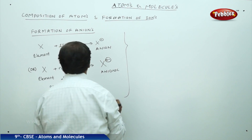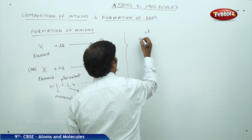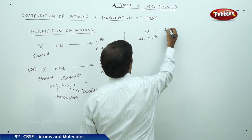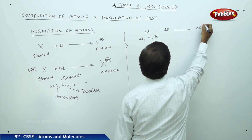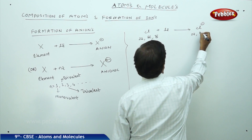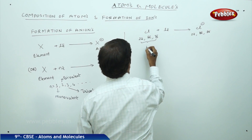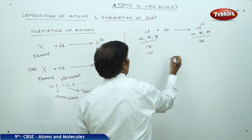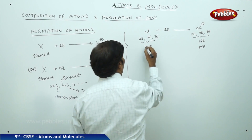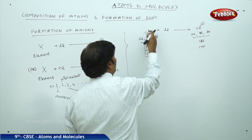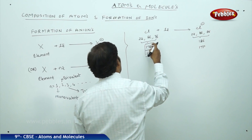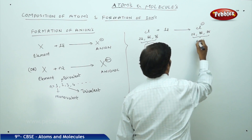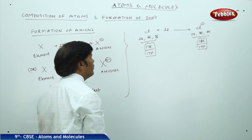For example, take chlorine — it contains 2, 8, and 7 electrons, with 7 electrons in the valency shell. Chlorine gains 1 electron and acquires 1 unit of negative charge, forming Cl−. It now contains 2, 8, 8 electrons — 18 electrons total — while it still has 17 protons.